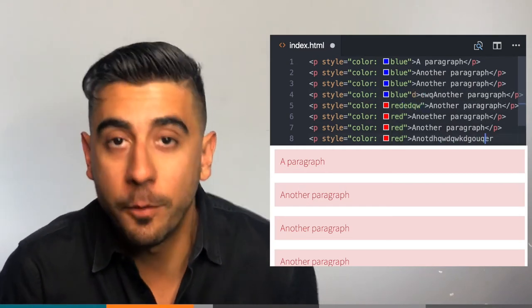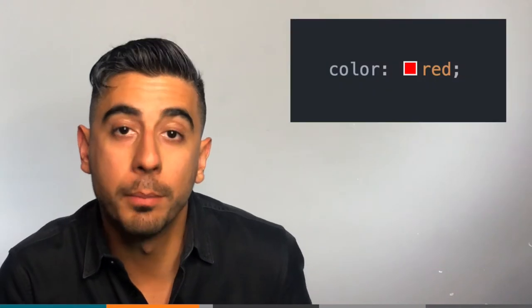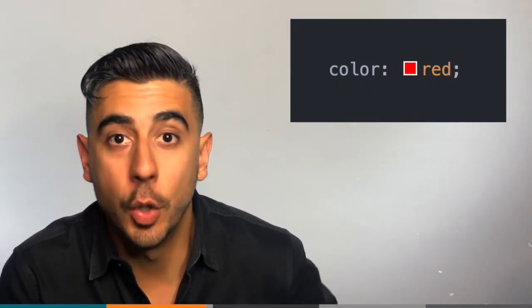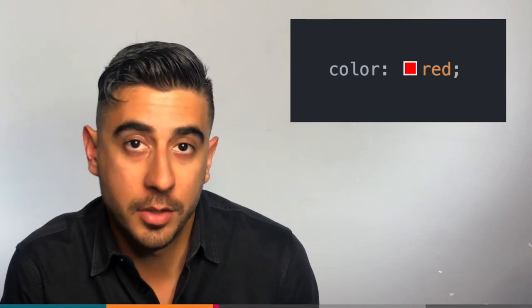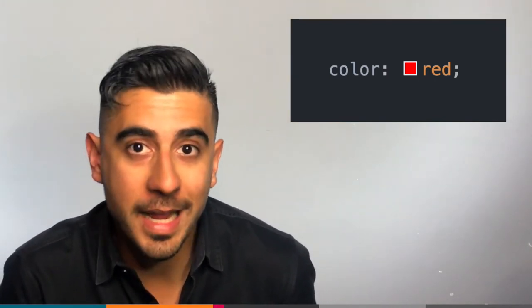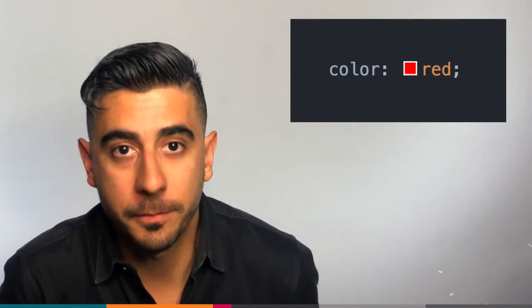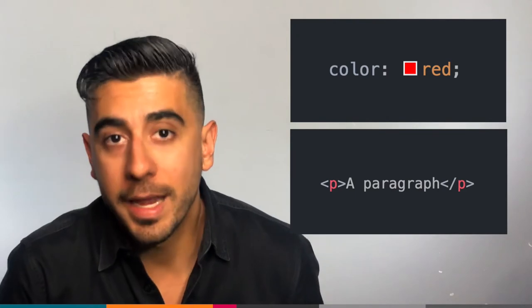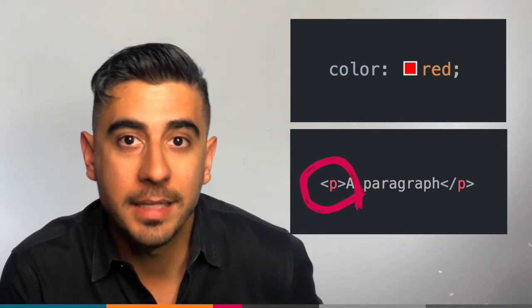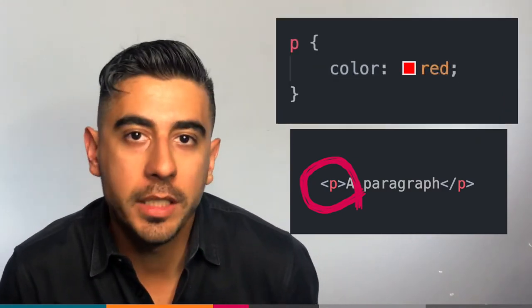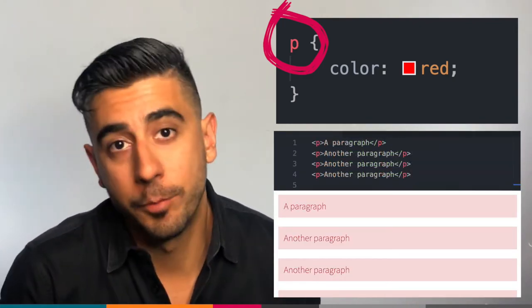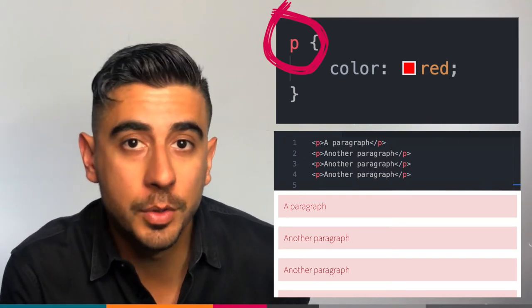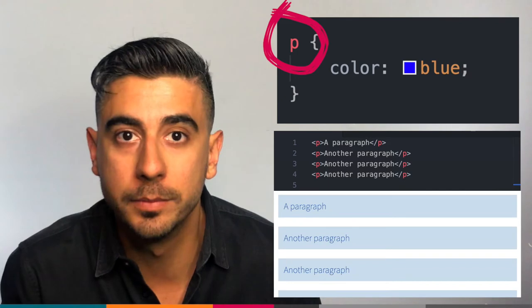This is why we have programming languages — to do the repetitive work for us. Instead, what if we could define our style in one place — color equals red — and have that go target all the paragraphs and change their colors for us? Well, we can, and that's why we need identifiers. One identifier you get for free without having to do anything is the type of tag itself. You can say 'target all the p tags and change them all to red,' then remove the style attribute from HTML, and if you need to change the color to blue, just change it in one place and you're done.